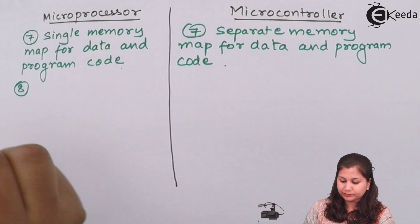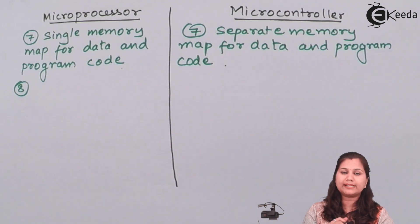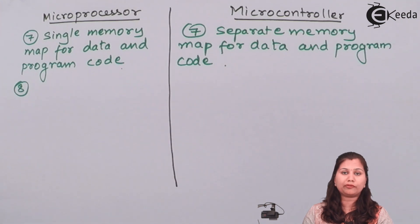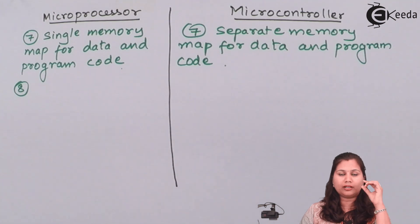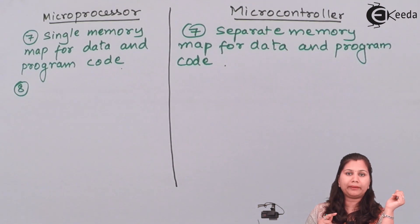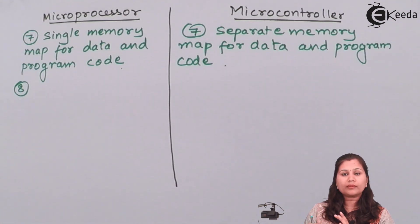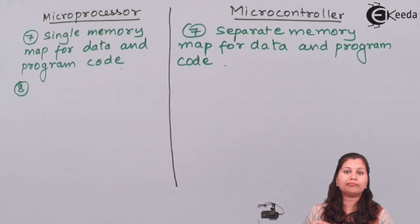Another difference is regarding pin functions. In microprocessors, ICs have pins with specific dedicated functions — for example, the 8085 microprocessor is a 40-pin IC where each pin performs a specific function. There are fewer multifunction pins in microprocessors. Whereas in microcontrollers, a single pin can be used for various types of functions — for example, a pin can serve as both an input and an output pin — so microcontrollers have many multifunction pins.